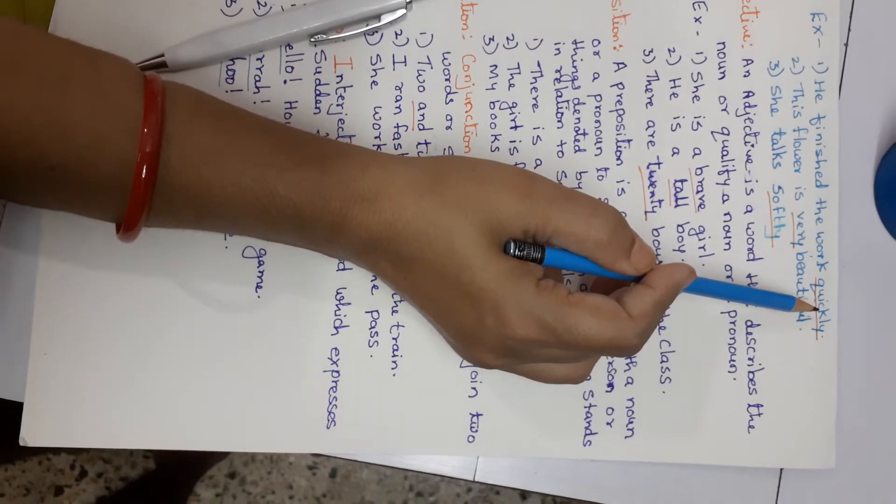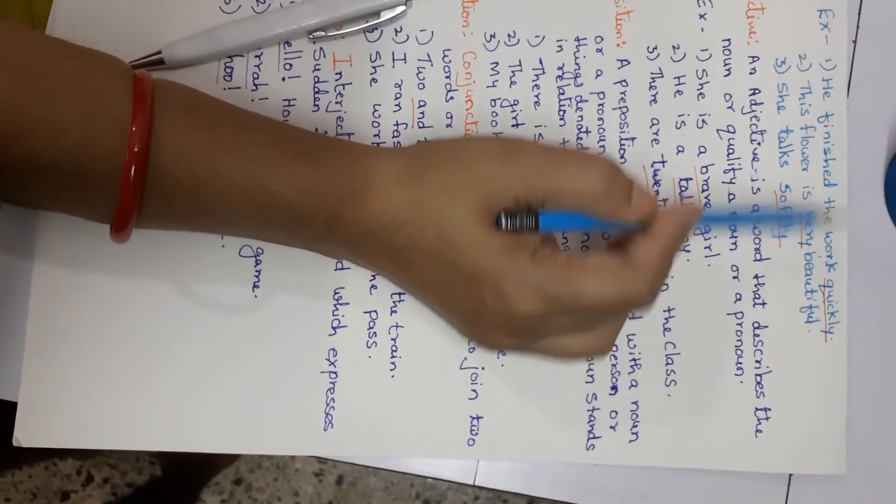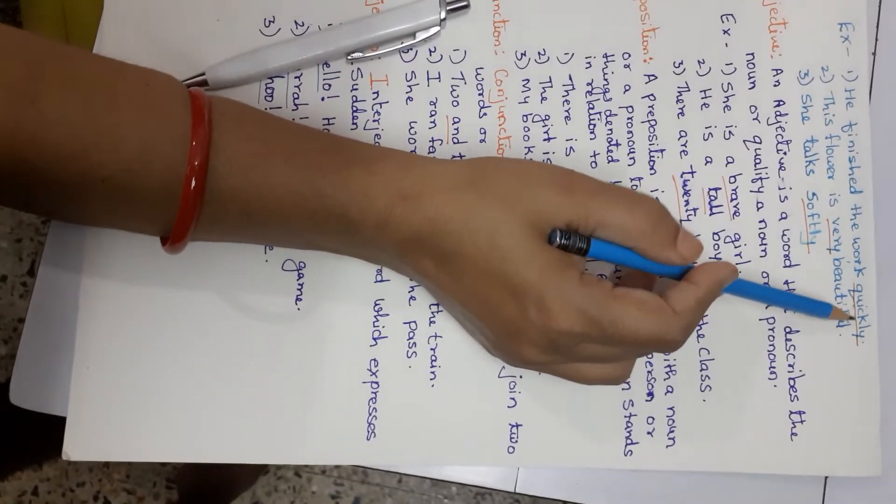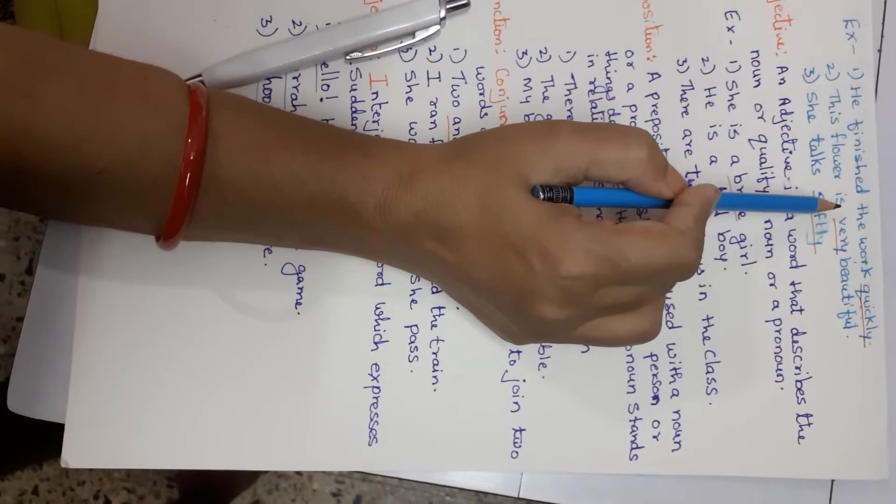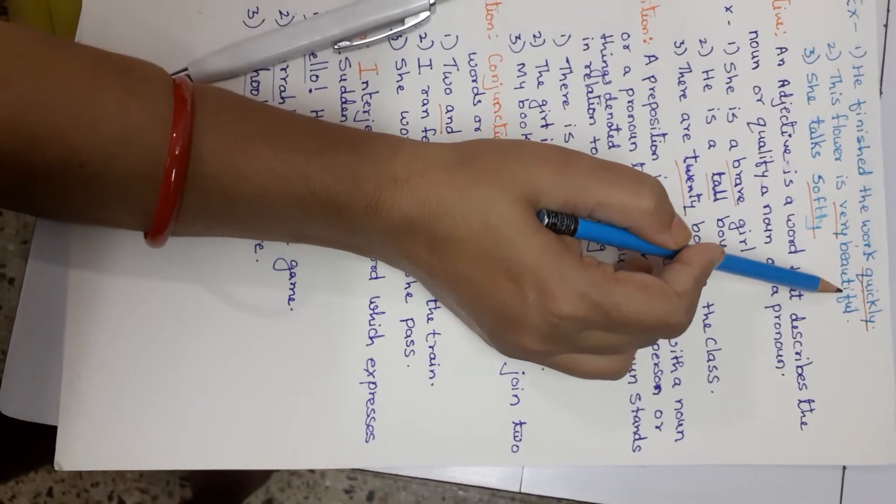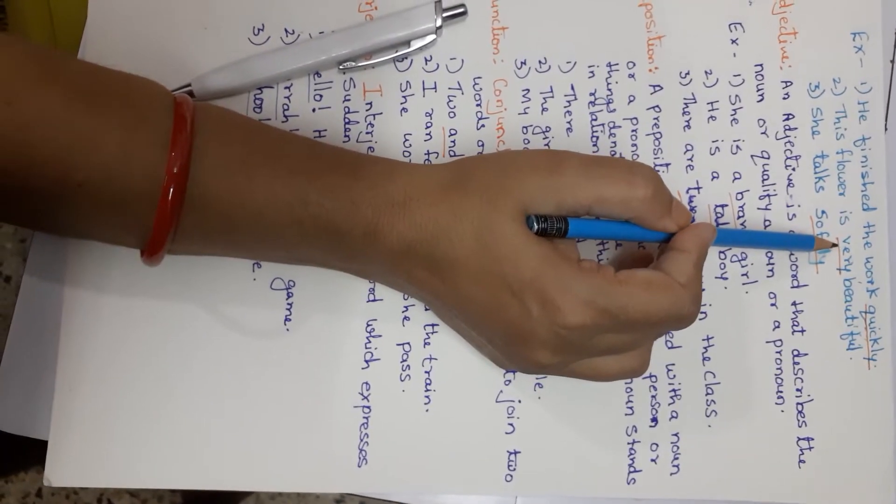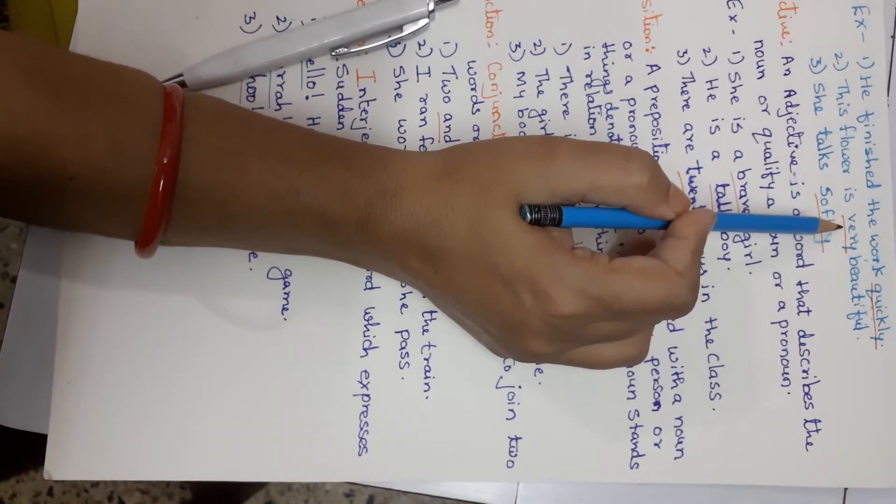So this is what adverb. How did he finish the work? Quickly. This flower is very beautiful. It is beautiful. But how is it? Very beautiful. So very is an adverb.